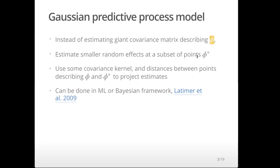The Gaussian predictive process tends to create fairly smooth spatial fields, and it's really only dependent on the vector phi-star. We choose how many of these smaller number of values — called knots — and we choose some covariance function. Beyond that, it's a very flexible approach. These types of models can be done in either a maximum likelihood or Bayesian framework. There's a great paper — one of my favorites — by Latimer in Ecology Letters that describes this kind of material, and it'll be a good introduction for people interested in applying these tools.